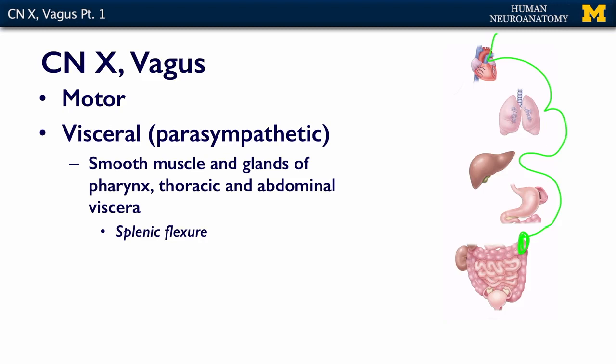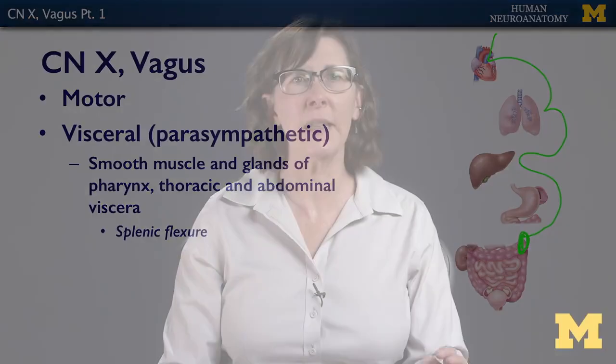That's why it's called the wanderer — because it goes all over the place. In the next section, we'll talk about the sensory component of the vagus nerve.